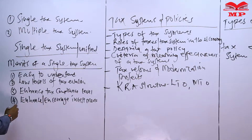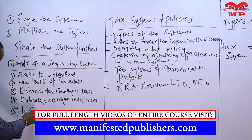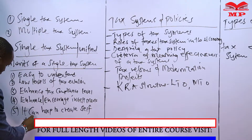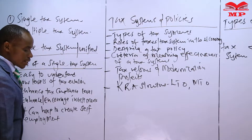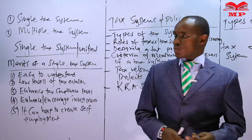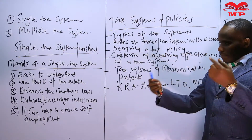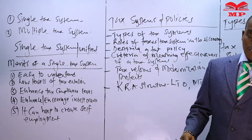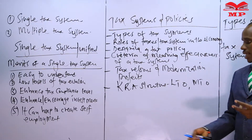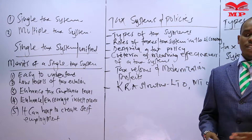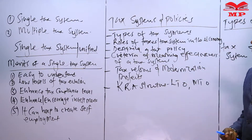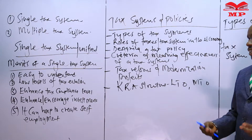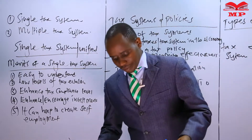Number five: a single tax system can help to create self-employment. The moment you allow people to save more and invest, such a person will be able to raise money and perhaps construct a building. When we have such a building, people can start businesses in such places. Therefore, a single tax system gives a big space to investors to save more money, do development, and in the process create self-employment for our people.